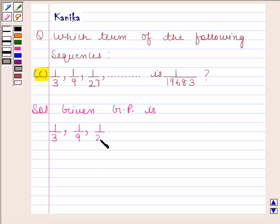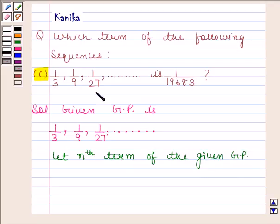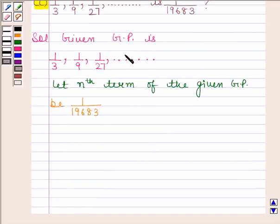1 by 27 and so on. Then, let nth term of the given GP be 1 by 19683. Now, in the given GP,